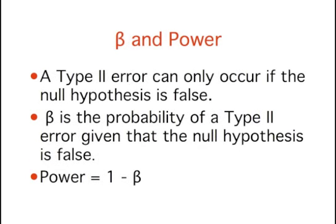A Type II error can only occur if the null hypothesis is false. If the null hypothesis is false, then the probability of a Type II error is called beta. The probability of correctly rejecting a false null hypothesis equals 1 minus beta, and is called power. Power is covered in detail in another chapter.